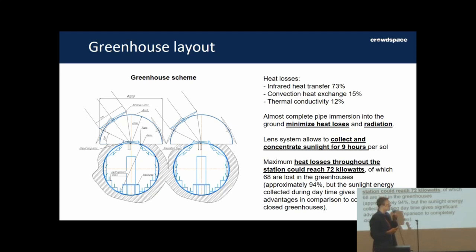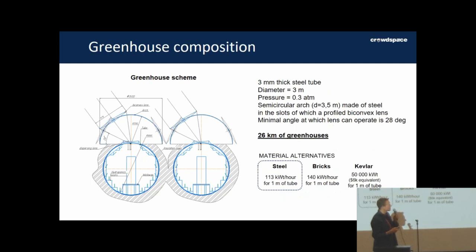We also have a system of lenses. There are two lenses: one is a big convex lens that concentrates sunlight to one point on the surface, and then at that point there is another lens that dissipates the sunlight inside the greenhouse. The system allows to get sunlight for nine hours with a very nice concentration that should be enough to actually heat greenhouses and to provide enough sunlight for plants.